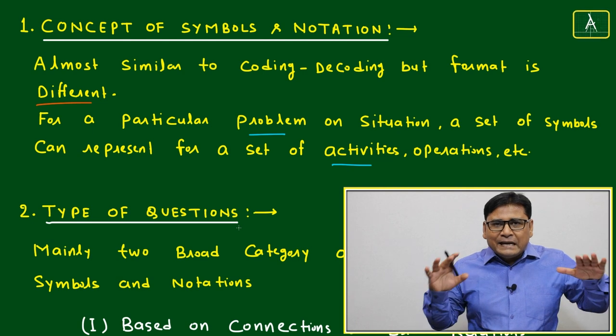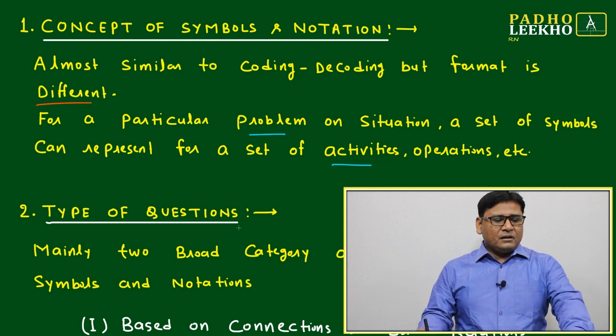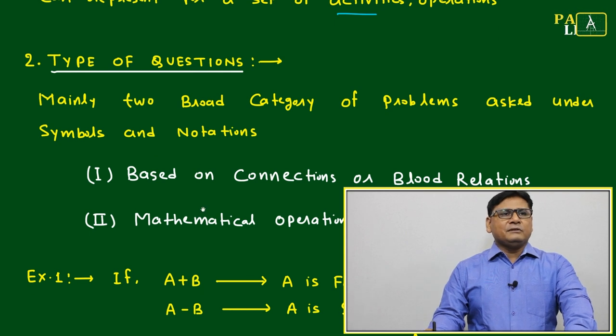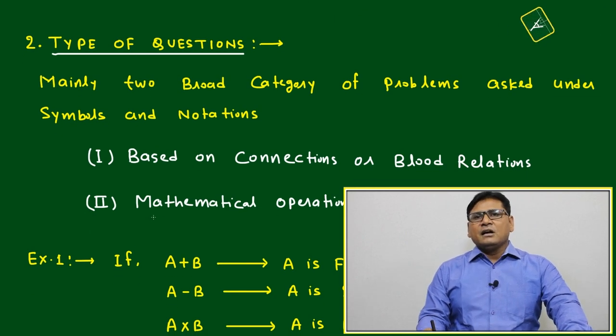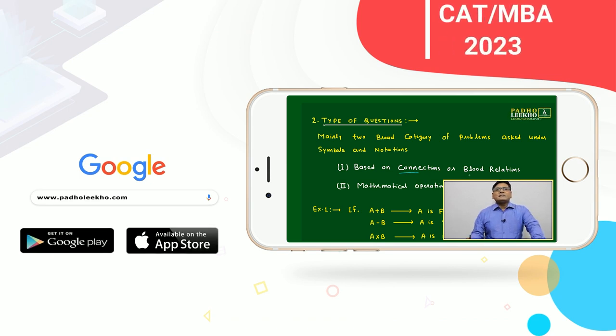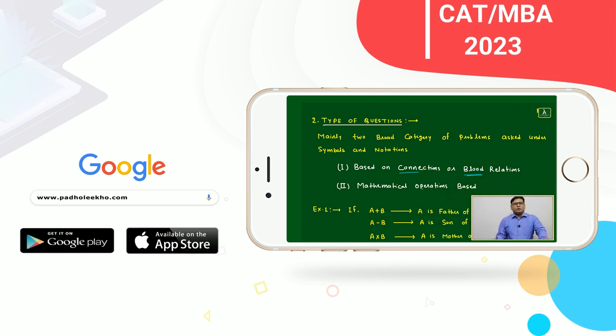Types of questions - mainly two types of questions will be asked or will be covered under symbols and notations. First is based on the connections or relations, mainly blood relations. And second is based on the mathematical operations. This covers almost all types.